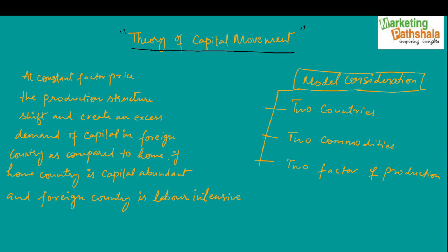It is an international investment related theory which explains how capital moves. According to this theory of capital movement, at constant factor price, the production structure shifts and creates an excess demand of capital in foreign country as compared to home, provided that home is capital abundant and foreign nation or country is labour intensive. This is the statement of this theory.